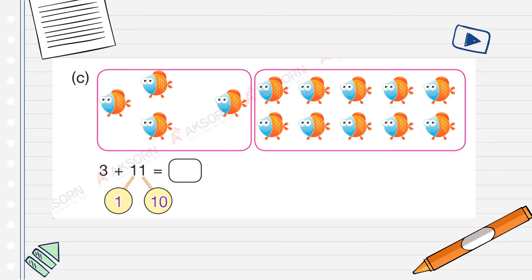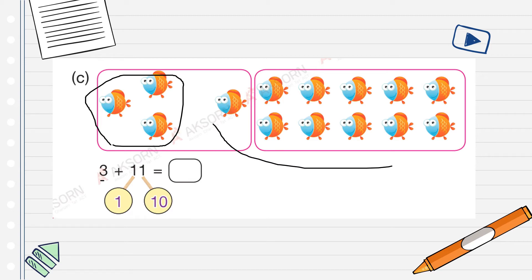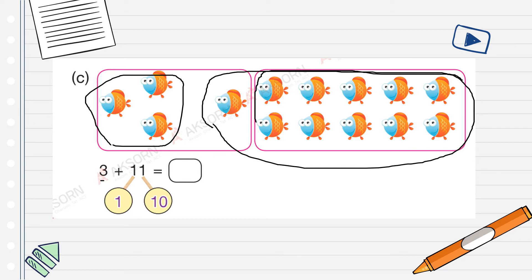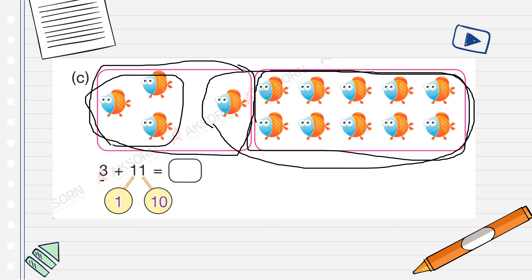For letter C, we have 3 fishes plus 11 fishes. You're going to group it in tens and ones. So we have 3 plus 11. First group into 10 and ones, then add: 3 plus 11 is equal to 14.